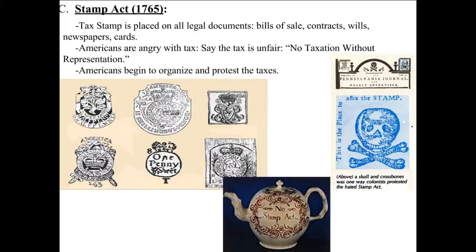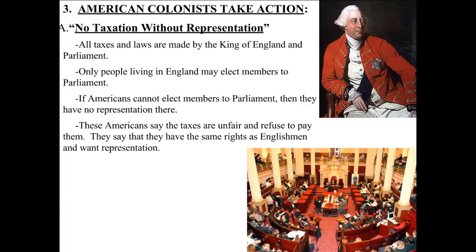The Stamp Act was another attempt by the English Crown to raise money and control the colonies. After the Stamp Act, the colonists took action. The way the system worked was that all taxes and laws were made by the King of England in Parliament, but only people living in England could elect members to Parliament.